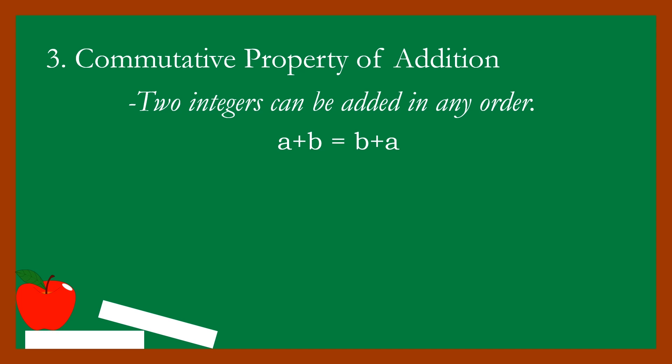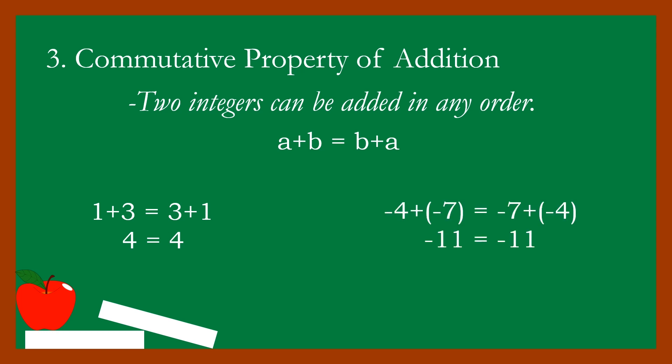For example, one plus three is equal to three plus one. One plus three equals four, and three plus one also equals four. Even with reversed order, the result is the same. Next: negative four plus negative seven equals negative eleven, and negative seven plus negative four also equals negative eleven.